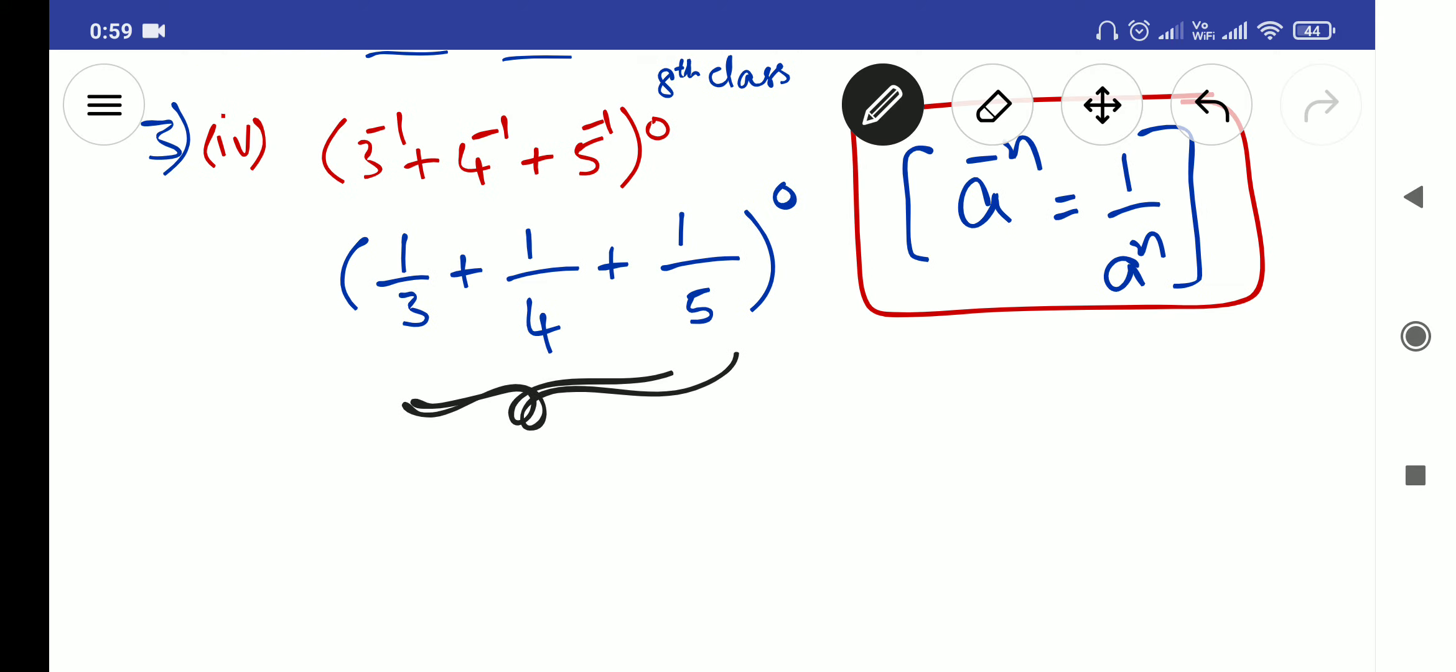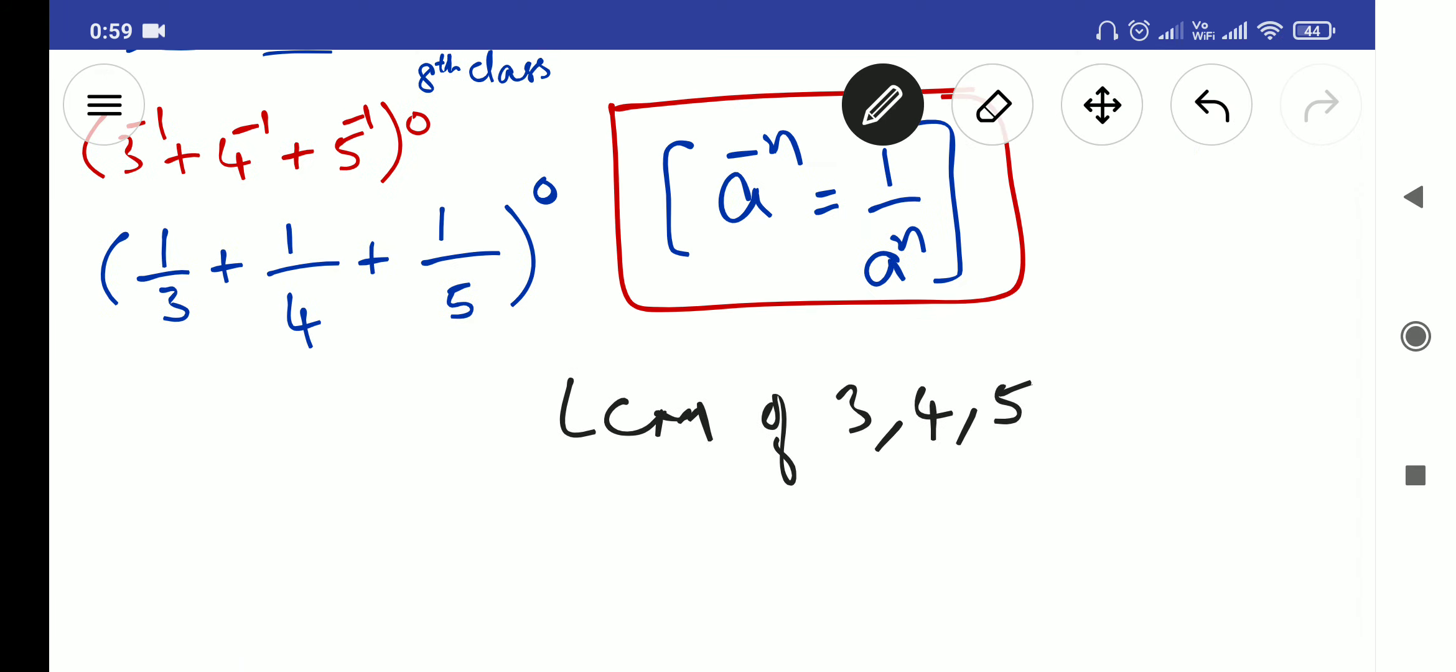LCM for 3, 4, 5 we will have to do, which will become, they are continuous numbers right? So 3, 4, 5 LCM will be 60 only. So no need of solving LCM of 3, 4, 5. These are continuous numbers, you will have to simply multiply them.